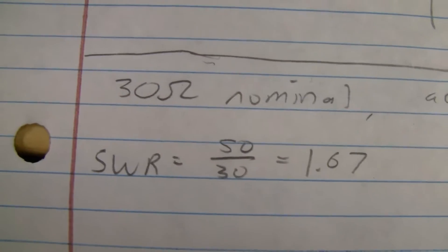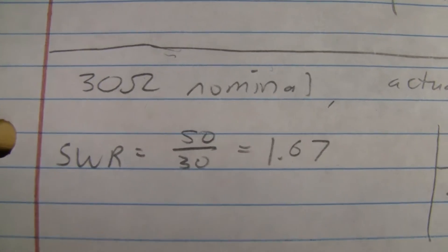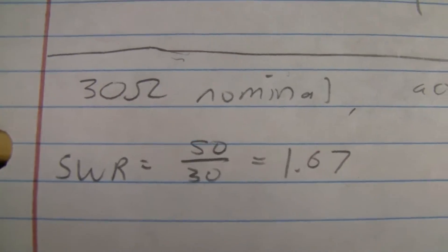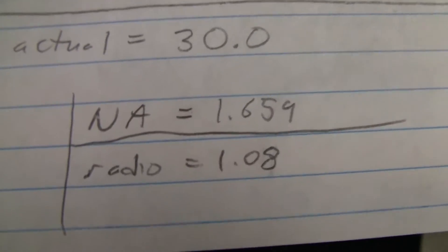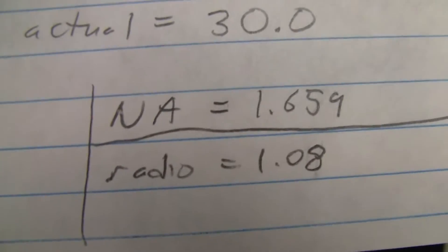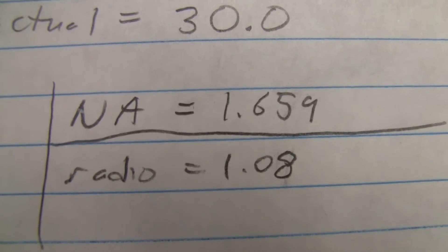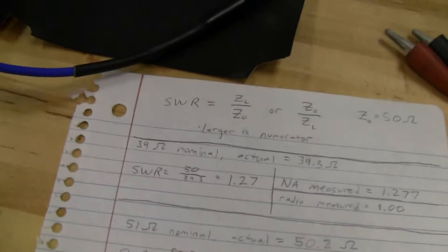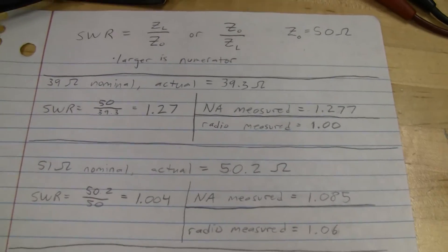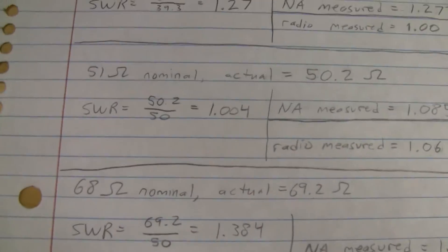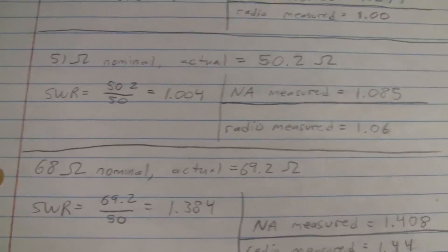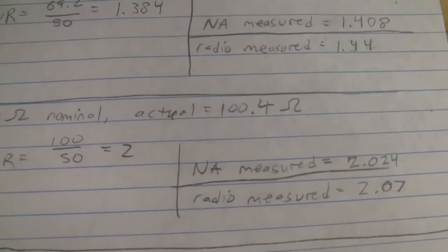And the same thing happened down here with a 30 ohm resistor. I wanted to get outside the range a little bit. We have an SWR of 1.67 calculated here, and then the network analyzer was pretty much spot on. But the radio, once again, measured just about zero. And so that was kind of puzzling to me, because I was really hoping it would be as accurate as it was for these other values, where it was pretty much spot on.